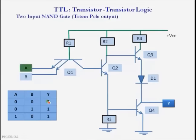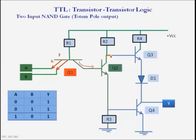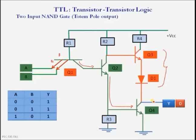When high voltage is applied to both A and B, both inputs are logic 1. The base-emitter junction is in reverse bias and the base-collector junction is in forward bias, so Q1 transistor is in the off state. There is current flow to the base terminal of Q2, so Q2 is in the on state. Logic 0 is applied to the base of Q3, so Q3 is in the off state. Current voltage is applied to the base of Q4, so Q4 is in the on state. There is no current flow through Q3 and D1, so the output is logic 0.